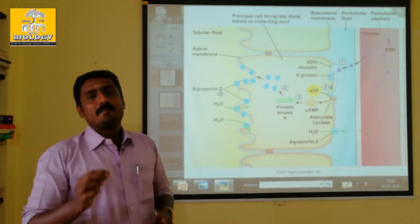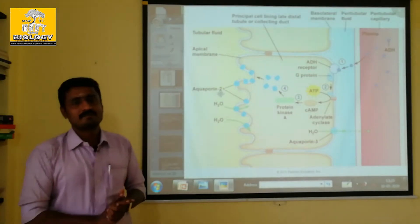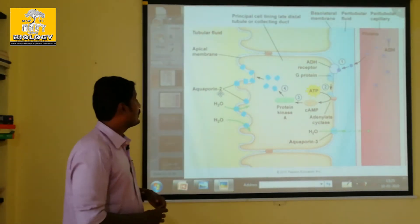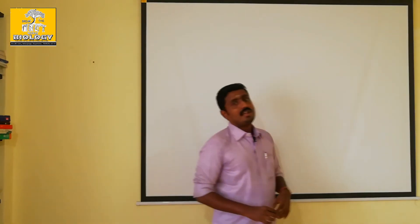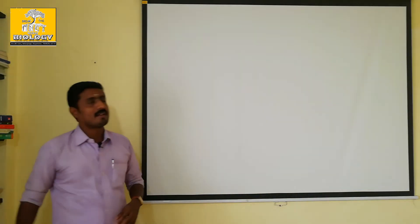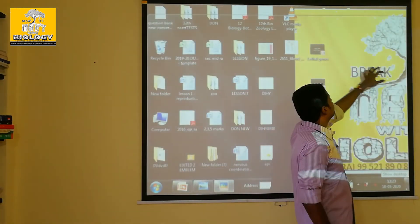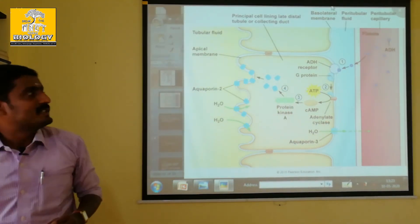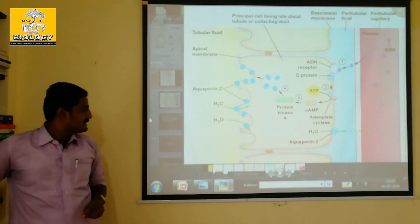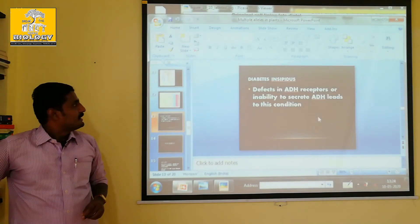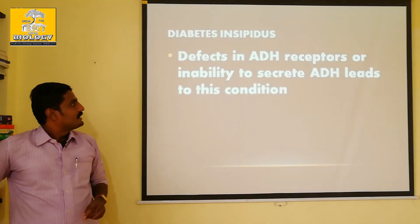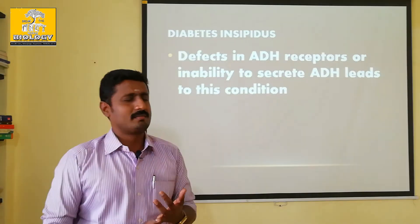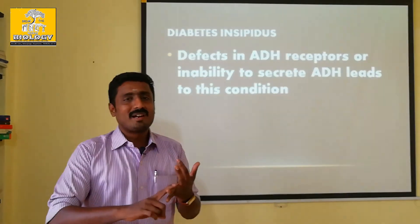That is called polydipsia. Polydipsia occurs because the body loses thin urine and becomes dehydrated. The bloodstream osmolarity increases. Our ADH system attempts to compensate, but if ADH is deficient they have the same complaint — thirst. This leads to polyuria and polydipsia as the two main symptoms.